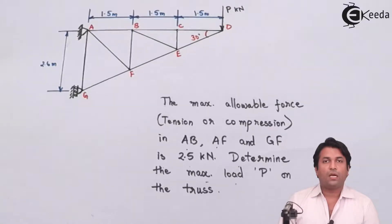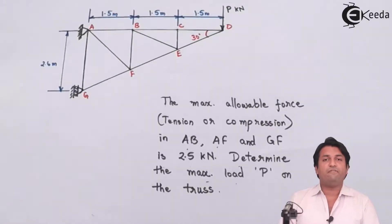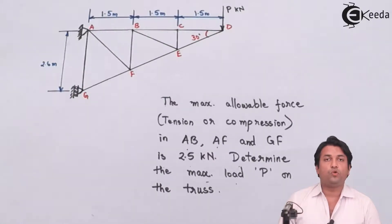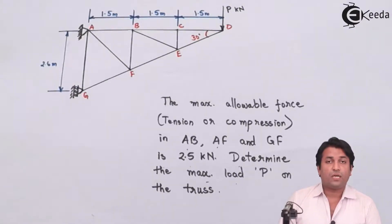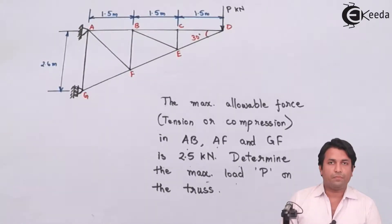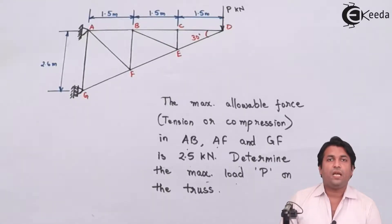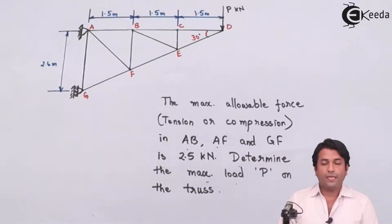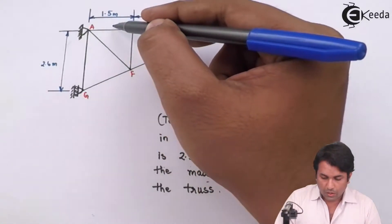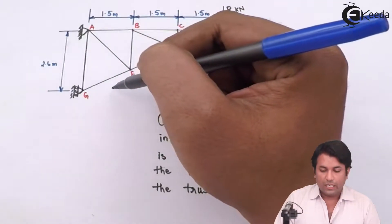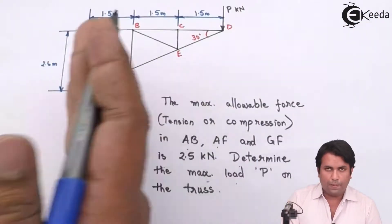The first thing we need to do is make a section plane. As we have seen in the previous two examples, whenever we make a section plane, it should cut the truss into two parts. We also have to make sure we are not cutting more than three members — in a rare or special case we might have to cut four. In this truss I can cut with a cutting plane such that I'm dividing the truss into two parts.